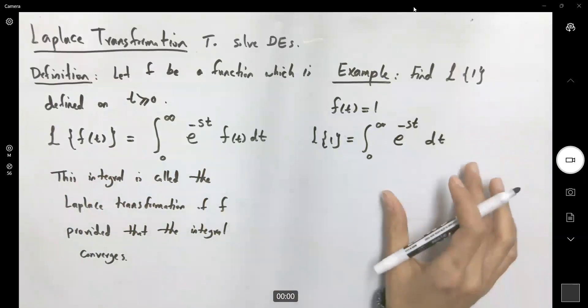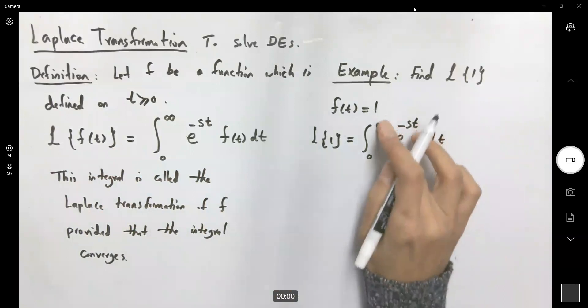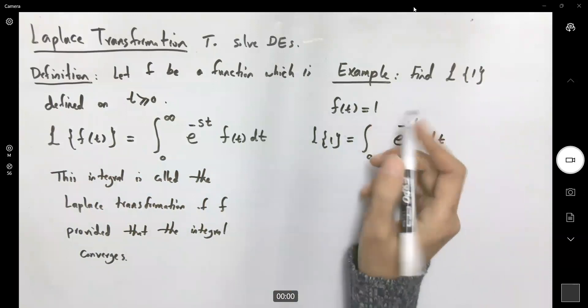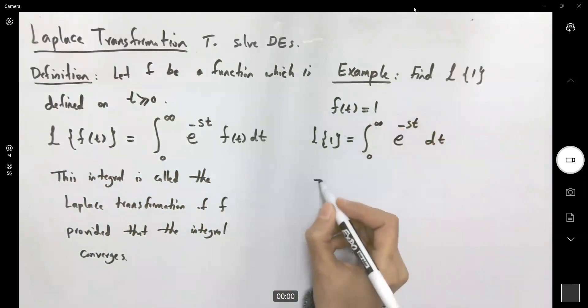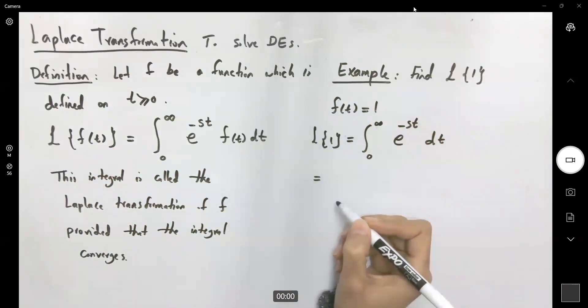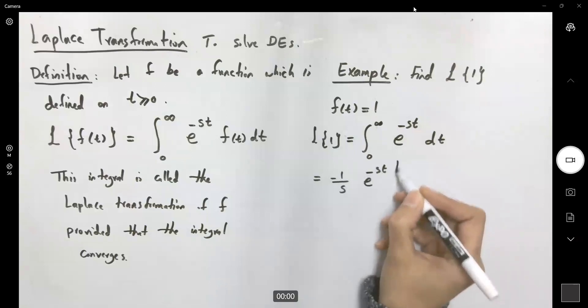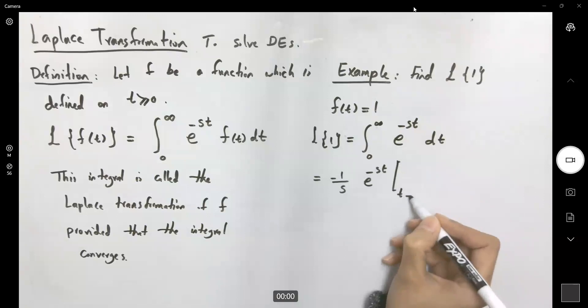Well, we already know how to take this integral. This improper integral is equal to negative one over s e to power negative st. t ranges between zero to infinity.